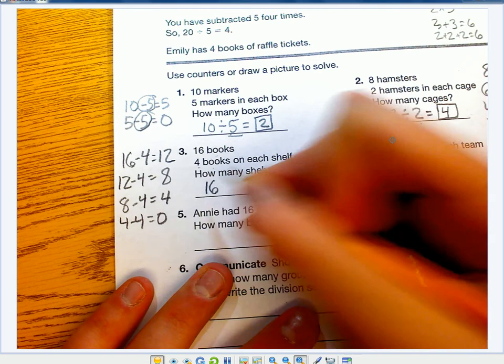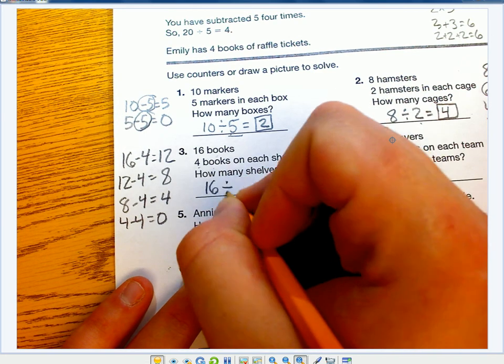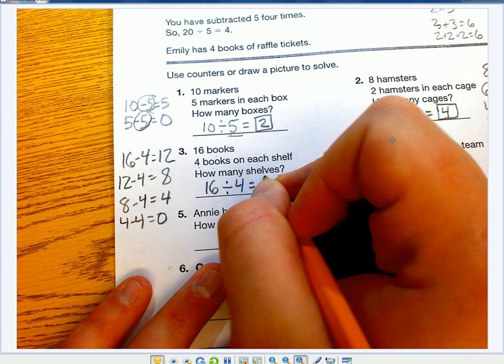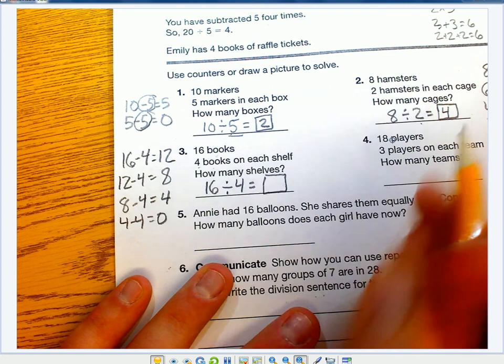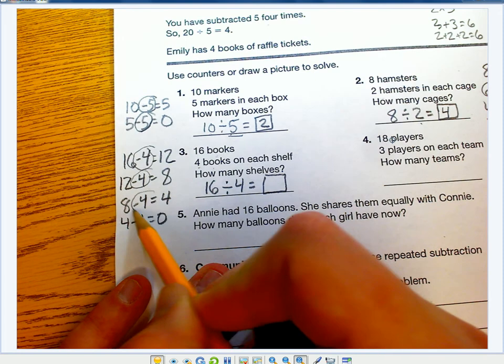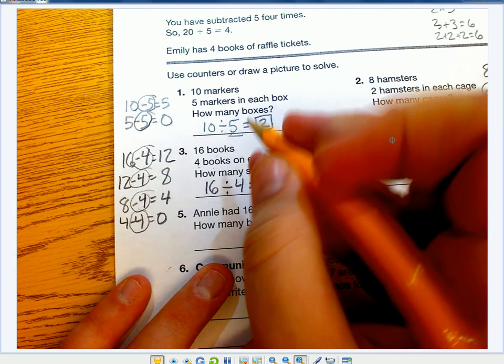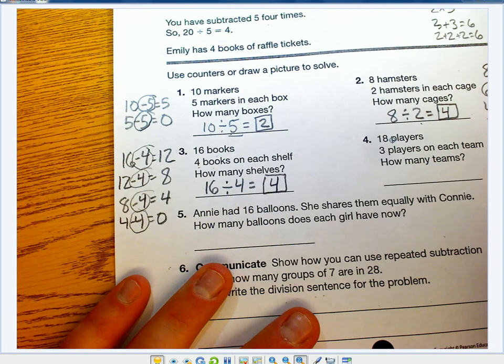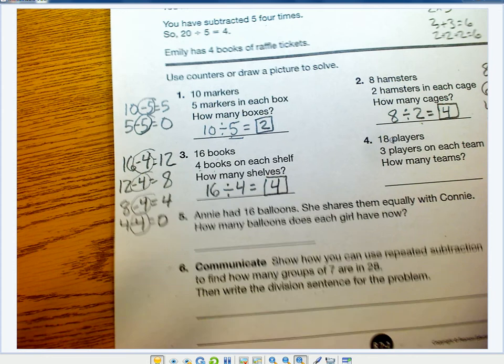16 is my total amount of books, divided by 4 books on a shelf equals what? Let's count how many times we subtracted: 1, 2, 3, 4. So 16 divided by 4 equals 4.